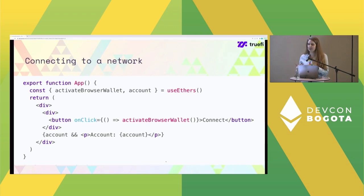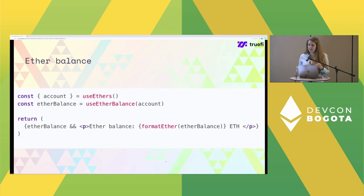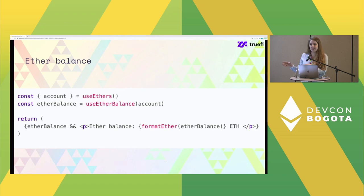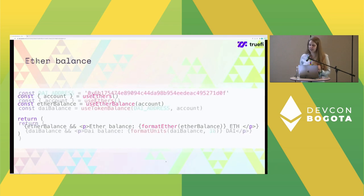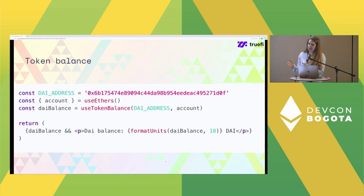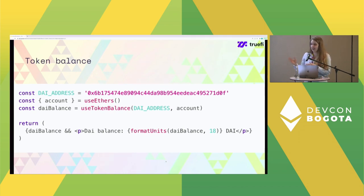The account variable is just the address that is currently connected. Another function, useEtherBalance, gets an account address and checks the balance. The nice thing is that this ether balance will be put in the multi-call — each hook generates only one call per new block, and the state is updated on each new block. We also have useTokenBalance: you pass the token address and account address and get the balance updated on each new block.